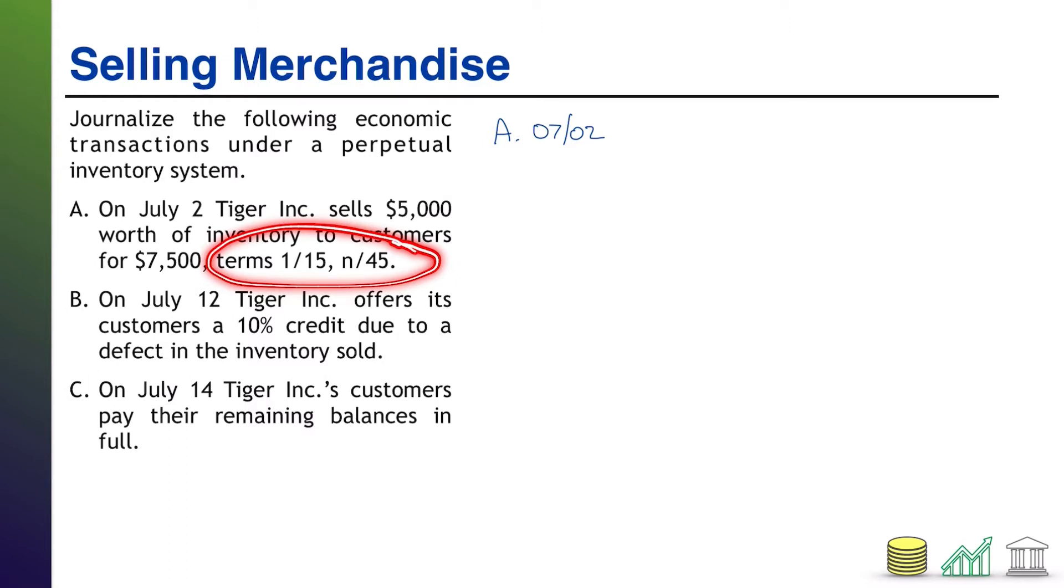Anytime you see payment terms, what it suggests is that the customer has not paid yet because these payment terms include a discount if they pay within a certain window or if they don't pay within the discount window when their net balance is due. On 7-2, because we see terms, we know that the customer is charging this to an account.